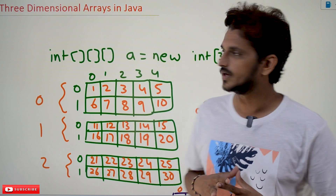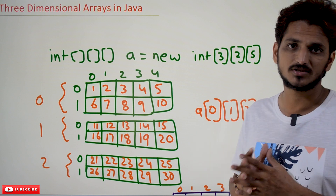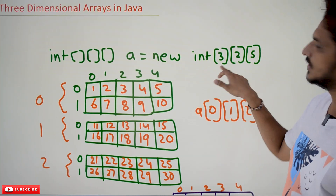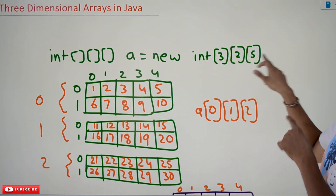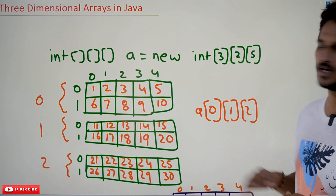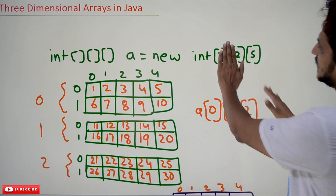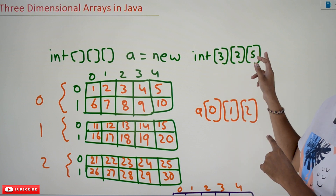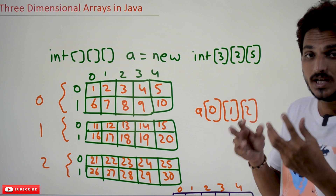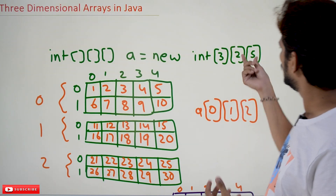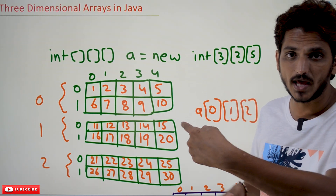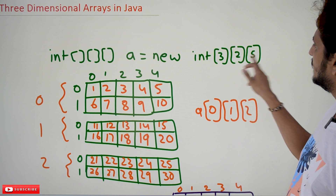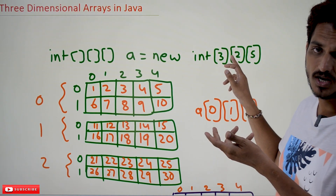Coming to today's class, first we need to understand what is a three-dimensional array. Consider: int[][][]  A = new int[3][2][5]. What's the meaning of this? The last two elements — 2 and 5 — mean we need a two-dimensional array of size 2x5, meaning two rows and five columns.